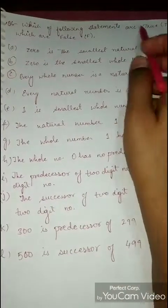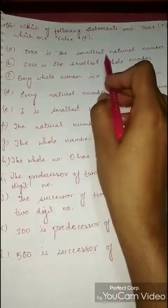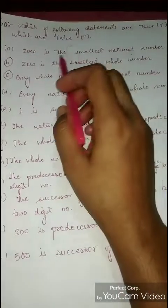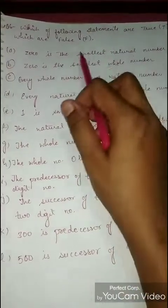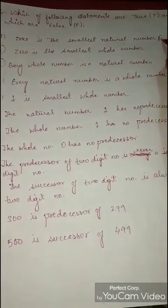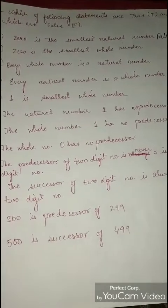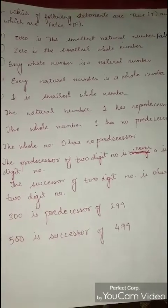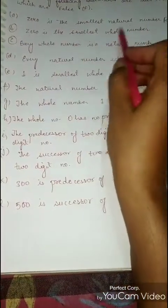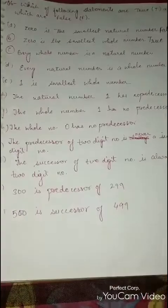Question number 2: Write whether the following statements are true or false. Statement: 0 is the smallest natural number. Is 0 a natural number? No, natural numbers start from 1, so this is False. Next: 0 is the smallest whole number. This is True because whole numbers start from 0 itself.